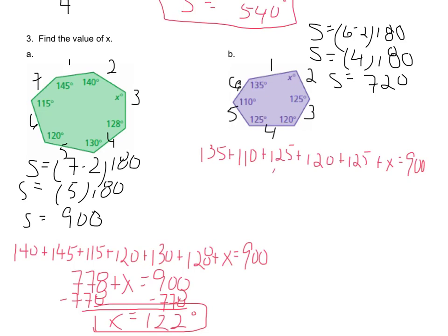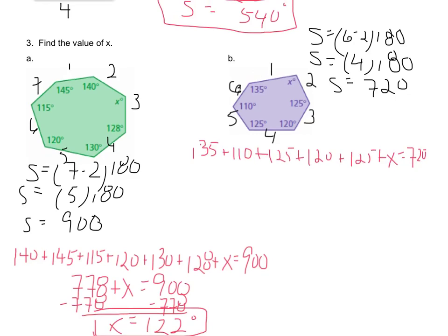So if I just add those together, I have six hundred and fifteen so far, plus the x equals 900. So here I have all of my angles added together to equal the 720, and I've created my equation.